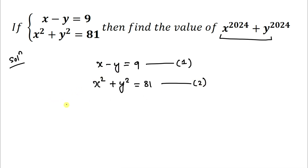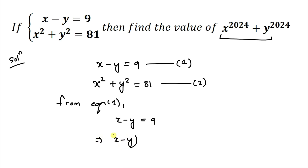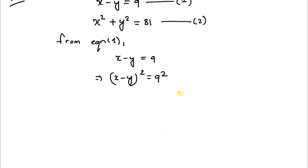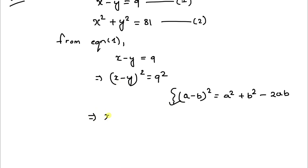In the next step I will square both sides of equation 1. From equation 1 we have x minus y equals 9. Squaring both sides: x minus y whole squared equals 9 squared. Using the algebraic identity (a minus b) squared equals a squared plus b squared minus 2ab, I can write: x squared plus y squared minus 2xy equals 81.